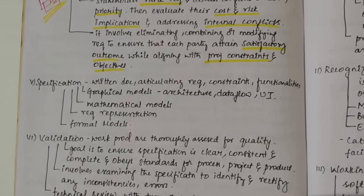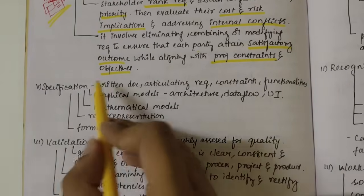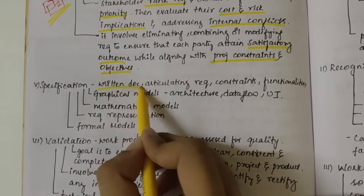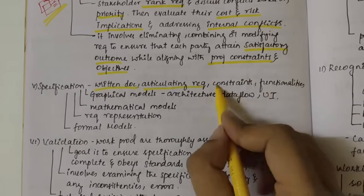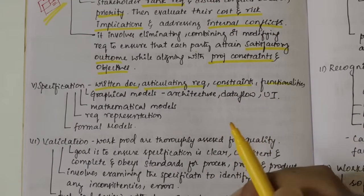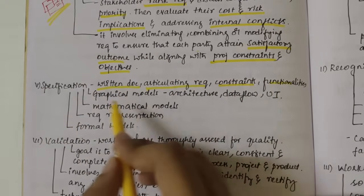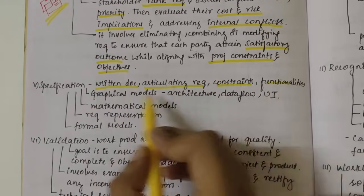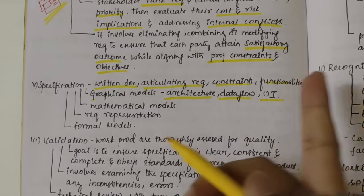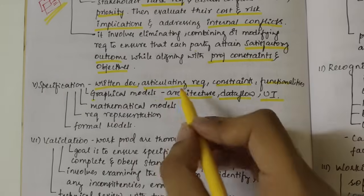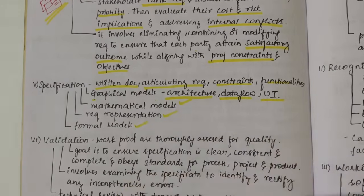Next we have Specification. Once negotiation is done and requirements are obtained in proper rank and priority, we specify them in a written document — articulating the requirements, constraints, and functionalities — so that in the future, when we update the software or project, we can refer to them. Specification is also done through graphical models including architecture, data flow, and UI, as well as mathematical models and formal models.